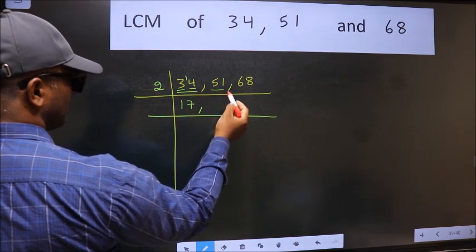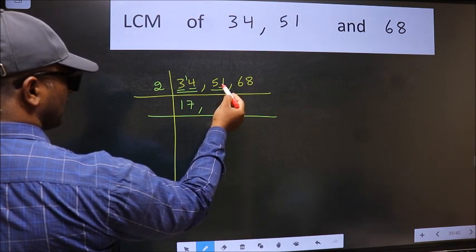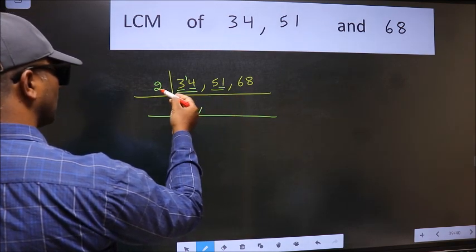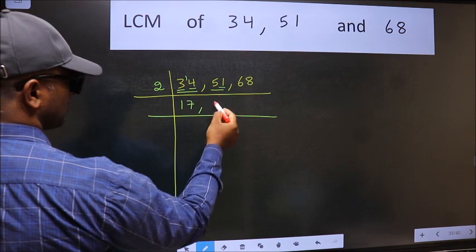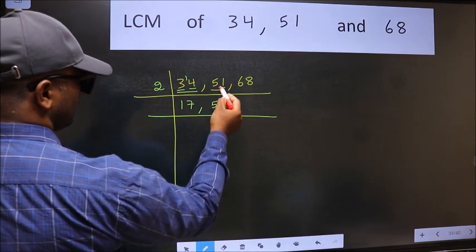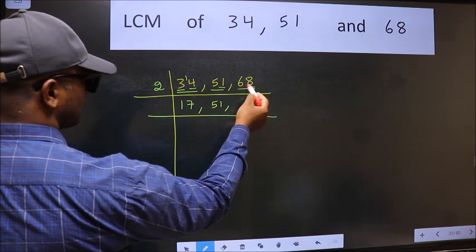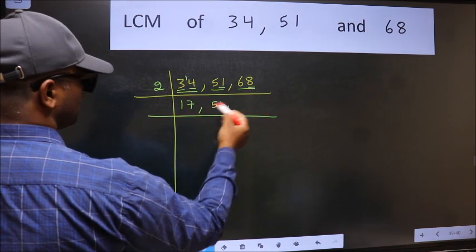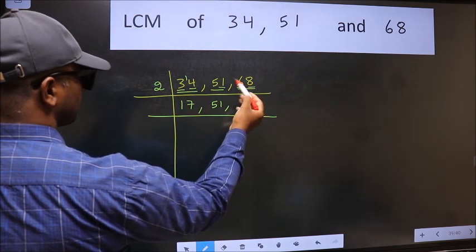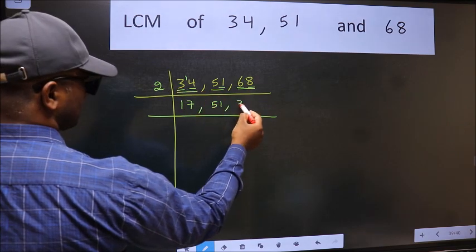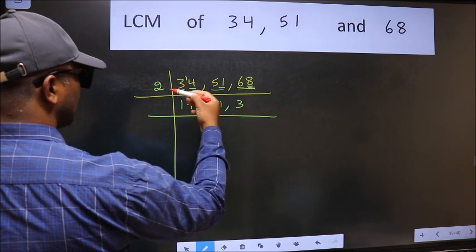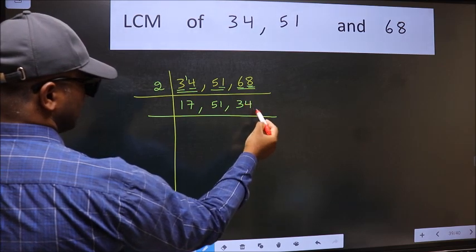The other number 51. Last digit 1, not even, so this number is not divisible by 2. Write it down as it is. The other number 68. Last digit 8, even, so this number is divisible by 2. First number 6. When do we get 6 in the 2 table? 2 threes are 6. The other number 8. When do we get 8 in the 2 table? 2 fours are 8.